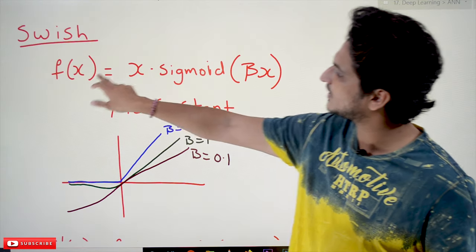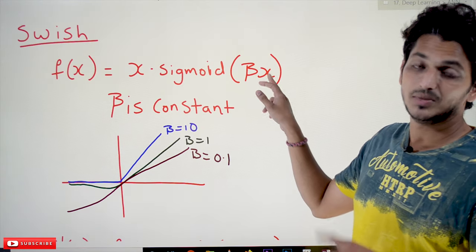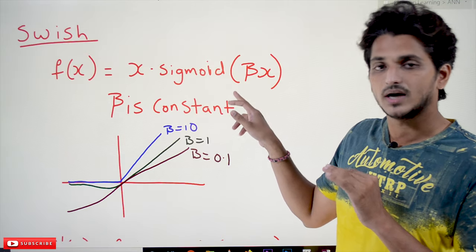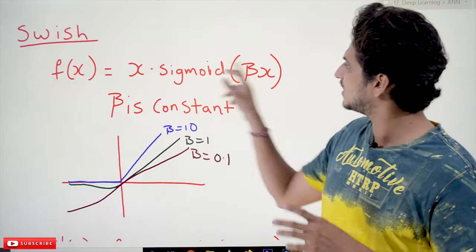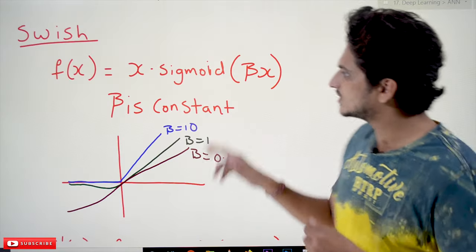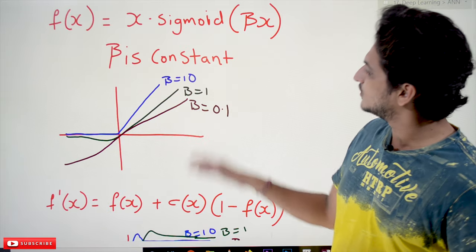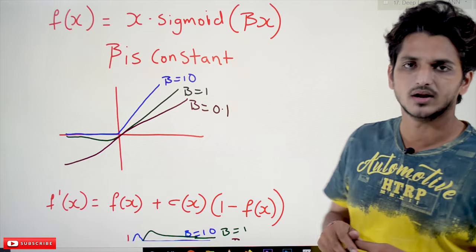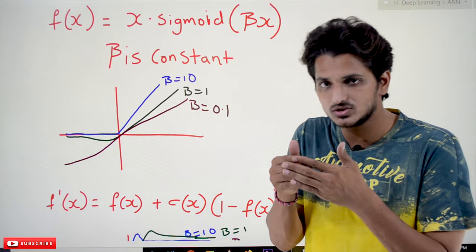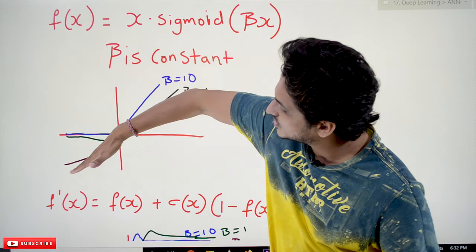The Swish function is given as f(x) = x · sigmoid(βx), where beta is a constant. We can take any constant value for beta, but most commonly they use sigmoid(x), considering beta as 1. If you take beta equal to 0.01 or 0.1 — a very small value — then beta is almost near to 0, and our Swish function works almost linearly.